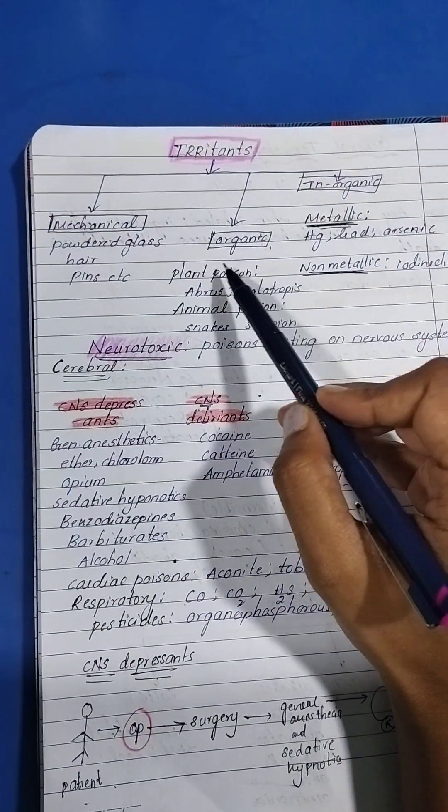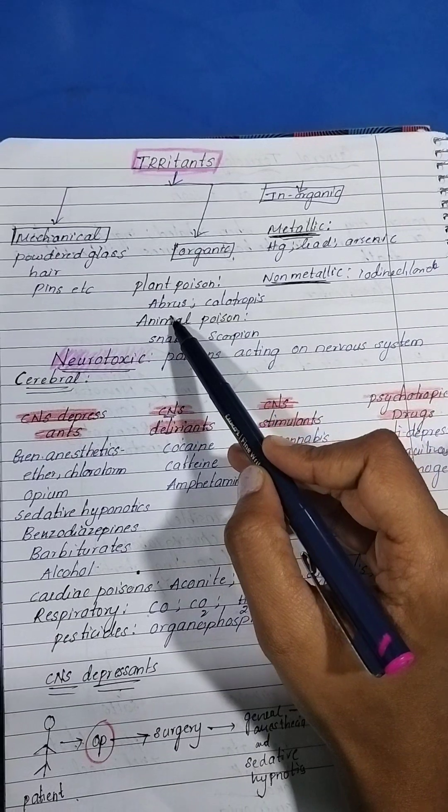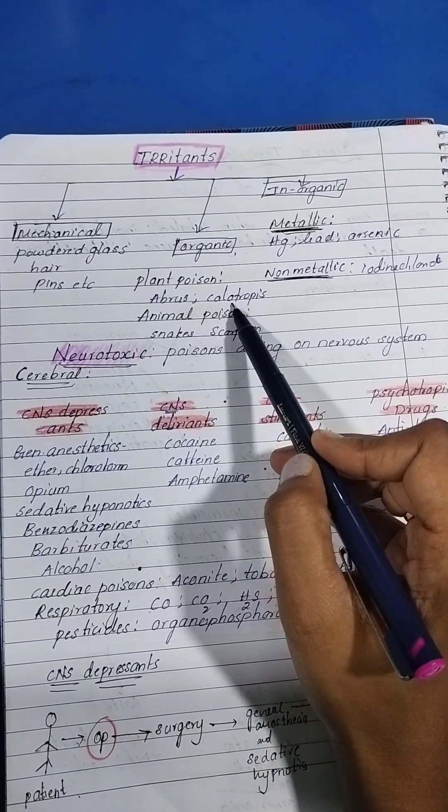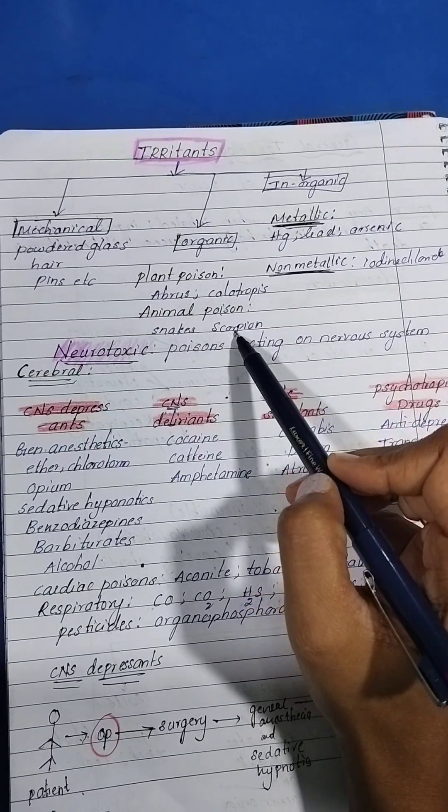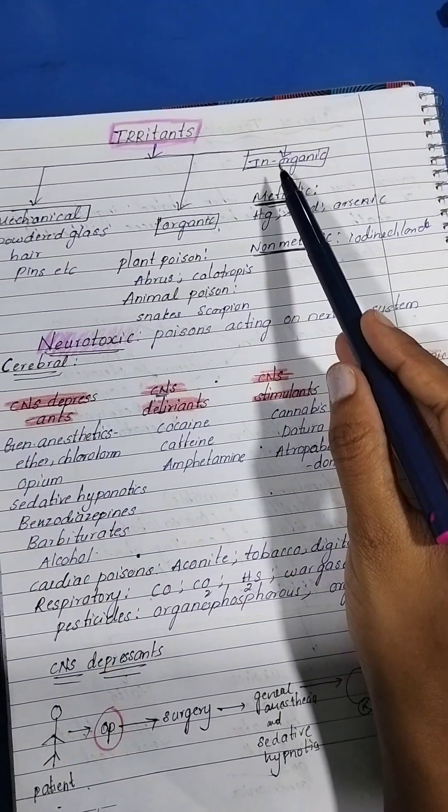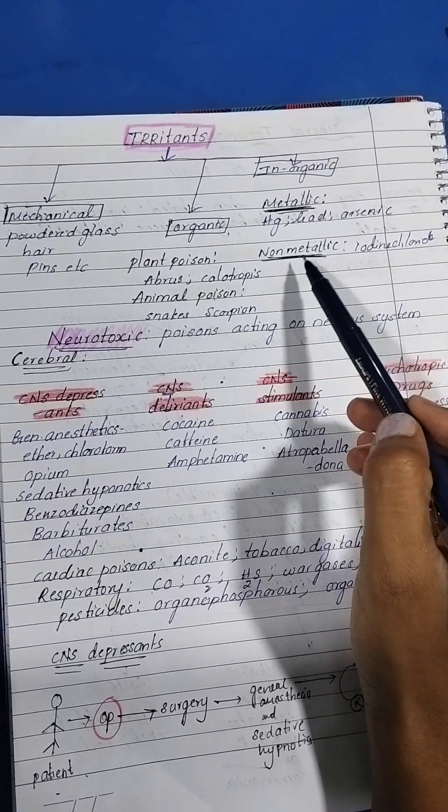In plant poisons we have Arbus ricatorius and Calotropis. In animal poisons we have snake bite and scorpion bite. Inorganic includes metals like mercury, lead, and arsenic, and non-metallic like iodine and iodine chloride.